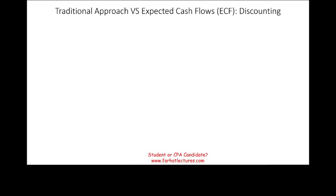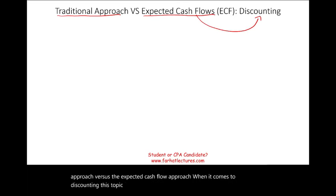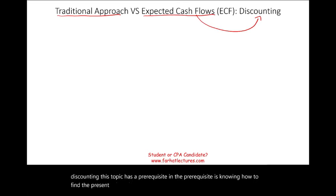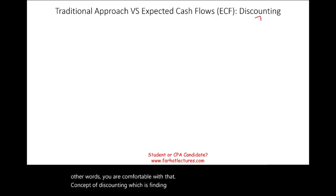Hello and welcome to the session in which we look at the traditional approach versus the expected cash flow approach when it comes to discounting. This topic has a prerequisite: knowing how to find the present value of a single amount and the present value of an annuity. In other words, you are comfortable with the concept of discounting, which is finding the present value.